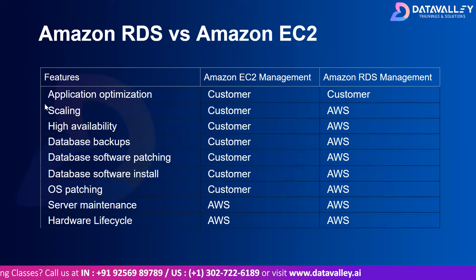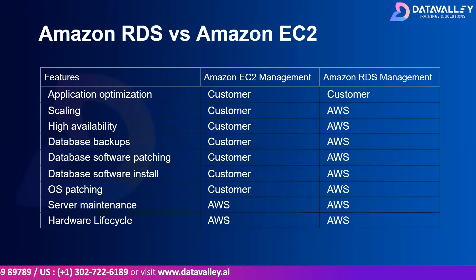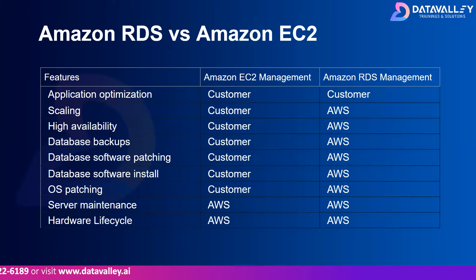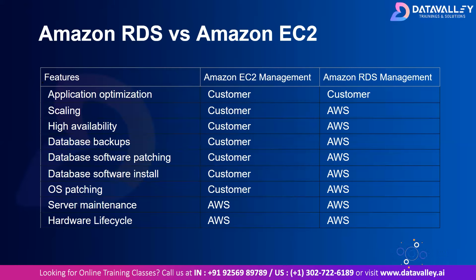Application optimization is entirely up to the customer — whether you use EC2 or RDS is your choice. For scaling with EC2-hosted databases, the customer must manage all scaling operations. With RDS, we have automatic scaling and automatic backup features that reduce operational overhead. We also have read replicas and multi-AZ databases that help provide high availability.